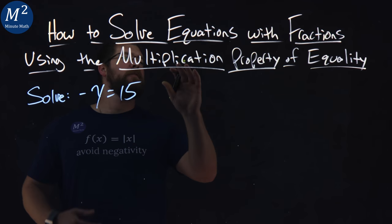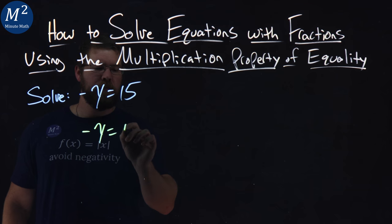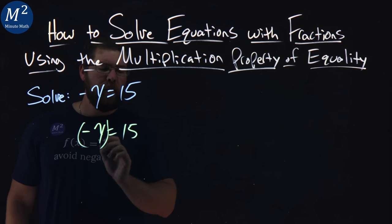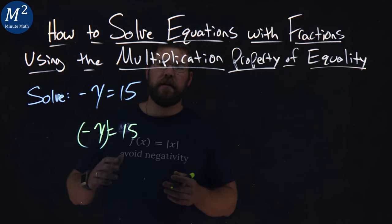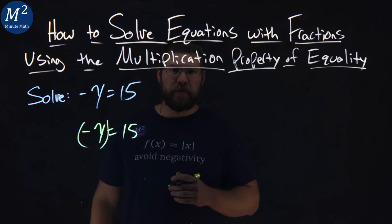To solve this, we're going to use the multiplication property of equality. I'm going to rewrite my problem. Negative y equals 15. Multiplication property of equality states if I multiply one side of the equation by one number, the same number can be multiplied by the other side of the equation.